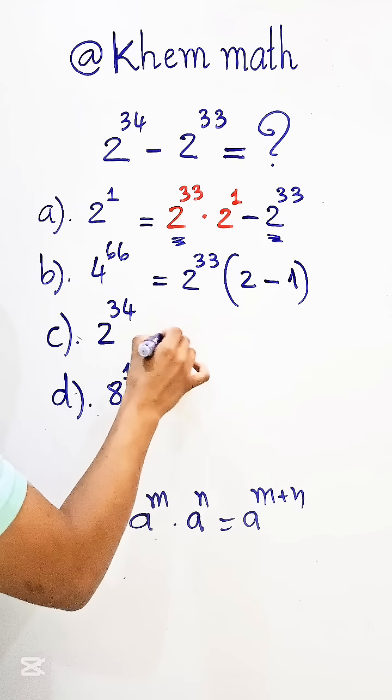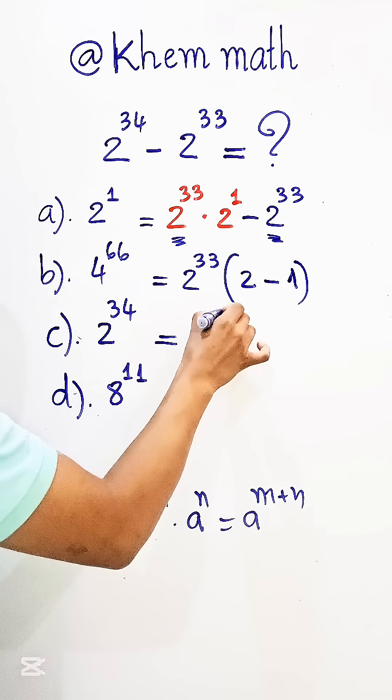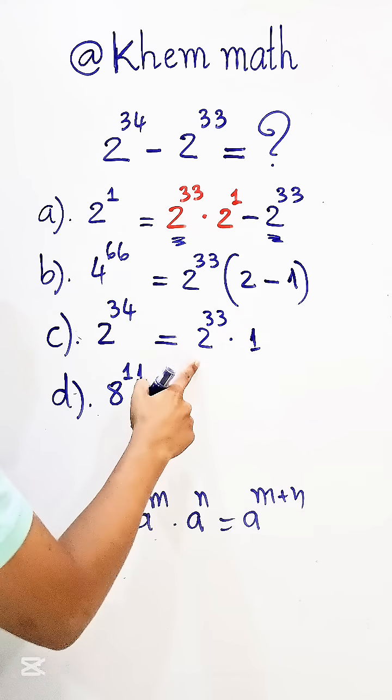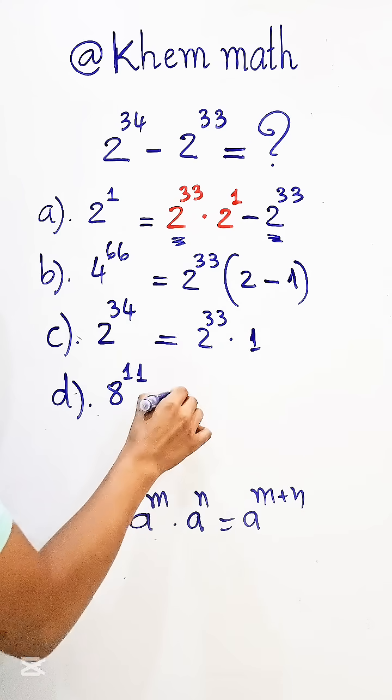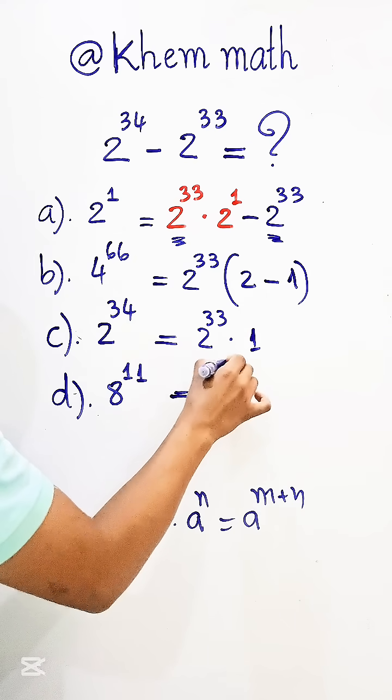So it equals 2 to the power 33 times (2 minus 1) equals 1. So 2 to the power 33 times 1 equals 2 to the power 33.